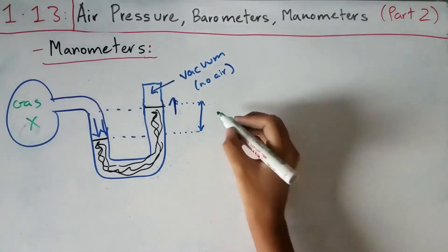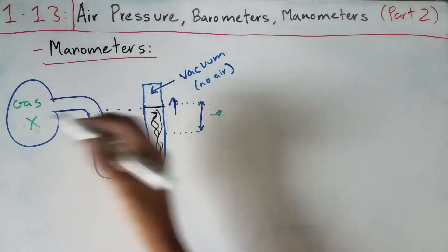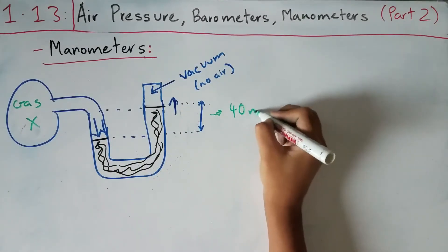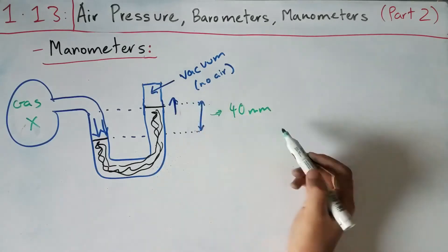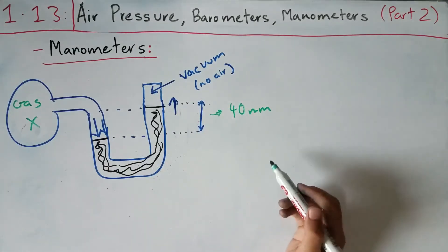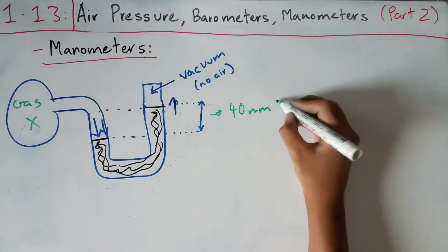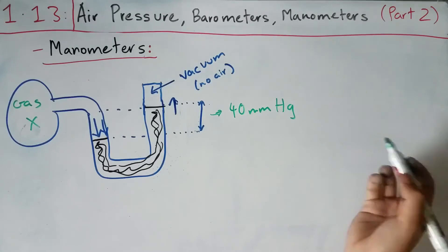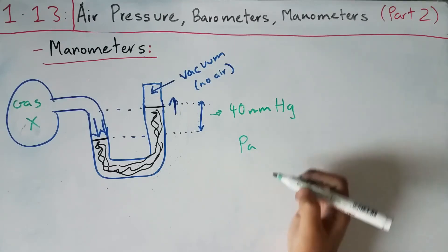For example, if the pressure of gas X causes the mercury to rise by 40 millimeters, then the pressure of gas X is 40 mmHg. You can then convert that to pascals or atmospheres as needed.